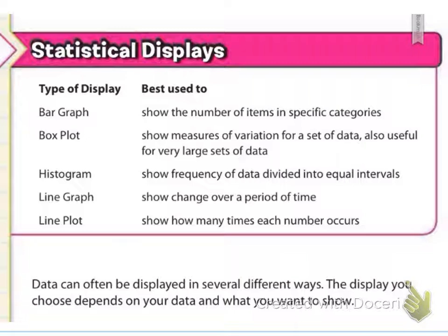If there were any marks for the one through five and the six through ten, I would add those to the two, but these all together are what I'm looking for. It's two plus zero plus zero, which is two all together. So we have different types of displays — we've got our bar graph, we have our box plot, we have our histogram, the line graph, and the line plot. We've been working with all of these.